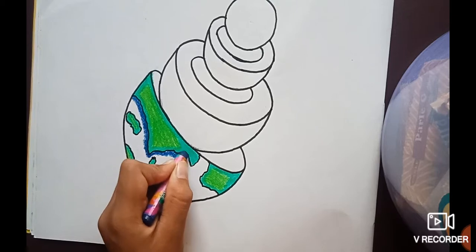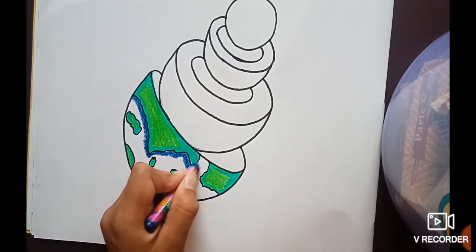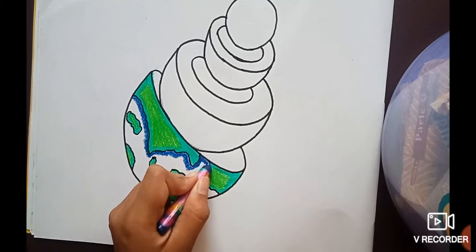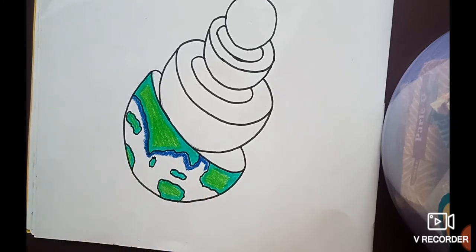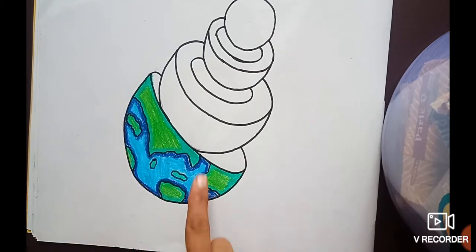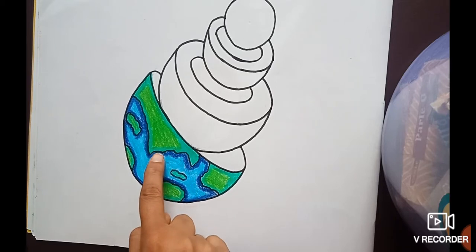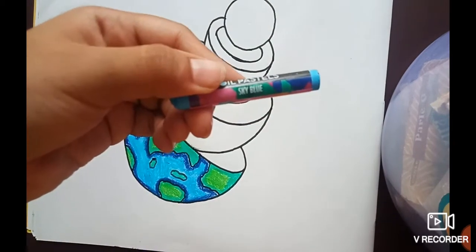Fill the oceans with light blue color and trace out the borders of the continents with darker blue color, and then fill it with the light blue or sky blue color.